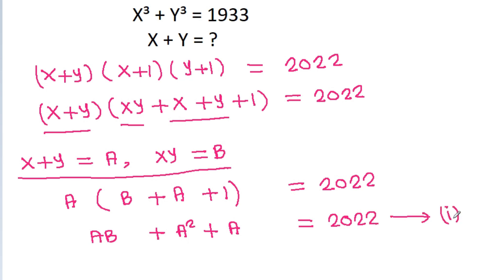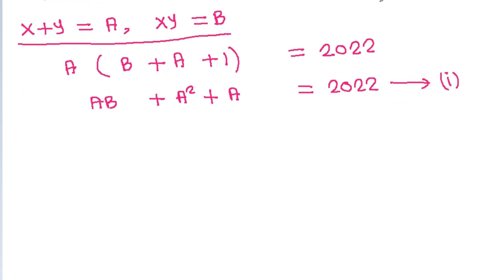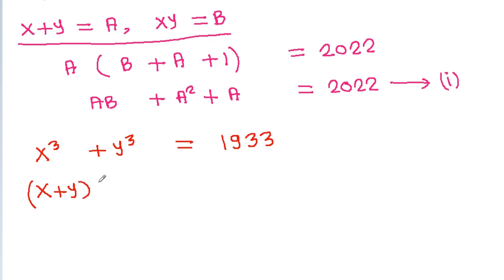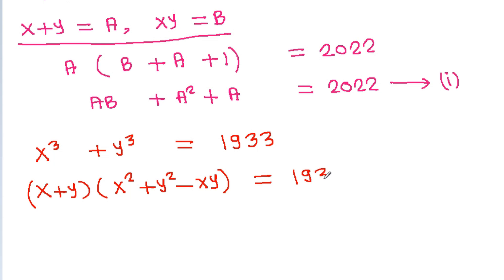We have x cubed plus y cubed equal to 1933. Using the identity: x cubed plus y cubed equals x plus y times x squared plus y squared minus xy, which is equal to 1933.